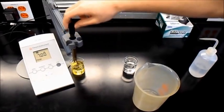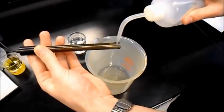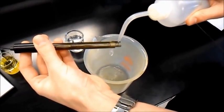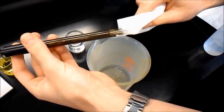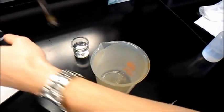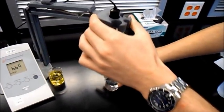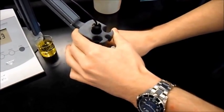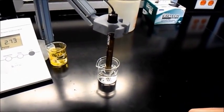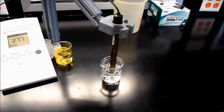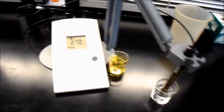To test a solution, rinse the probe and dab it dry. Then simply submerge the probe in the solution you want to test. When the reading is stabilized, a bold letter S will appear in the upper left corner of the screen.